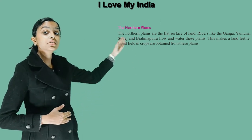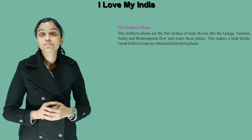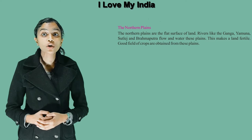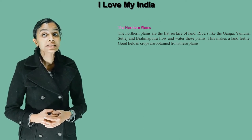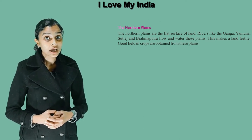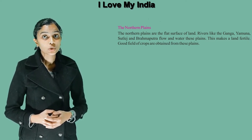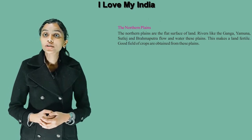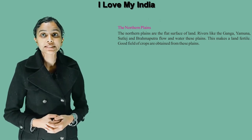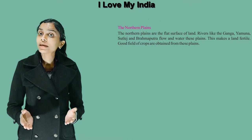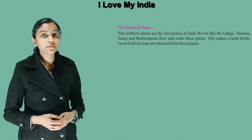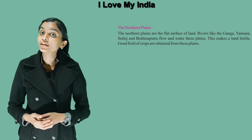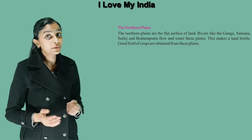The second one is the Northern Plains. The Northern Plains are the flat surface of land. Rivers like Ganga, Yamuna, Satloj and Brahmaputra flow and water these plains. This makes the land fertile. Good fields of crops are obtained from these plains.